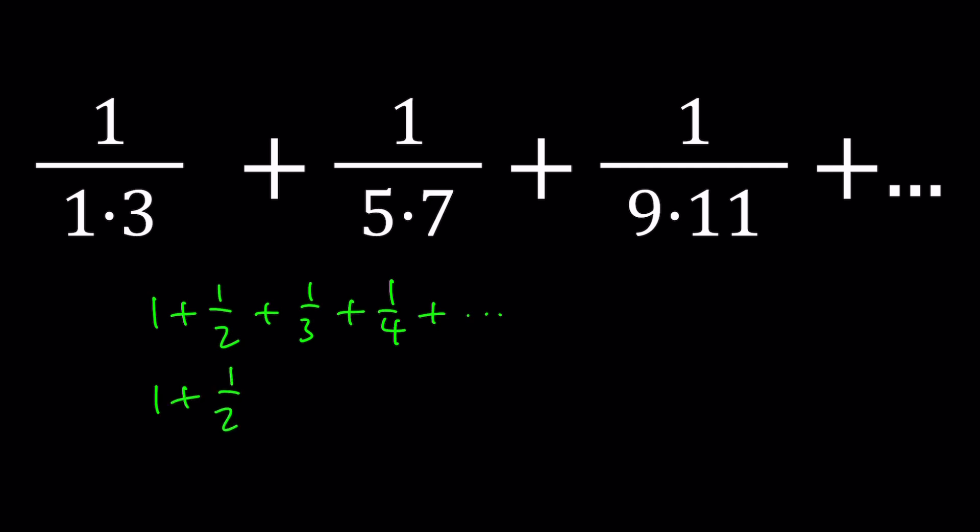But if you have the squares, then it's a different story. If you have 1 plus 1 over 2 squared plus 1 over 3 squared plus 1 over 4 squared and so on, does that have a definite sum?